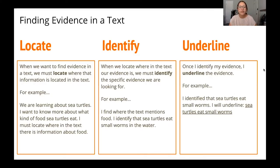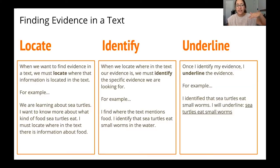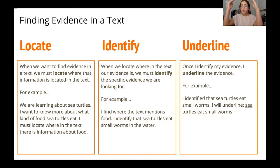Here is a quick guide for how to find evidence in the text — there are three steps. The first step is to locate, the second is to identify, and the third is to underline. When we locate, to find evidence in a text we must locate where the information is in the text. If you are given a question to answer after reading a selection, you first have to locate where in the text you read that — was it in the first paragraph, somewhere in the middle, or in the closing paragraph?